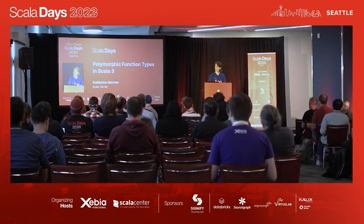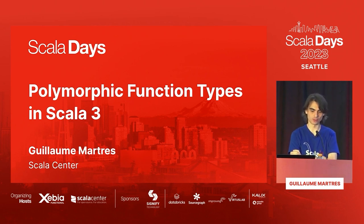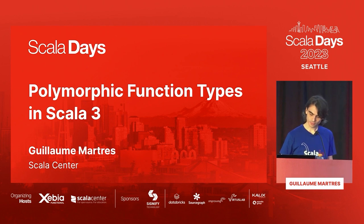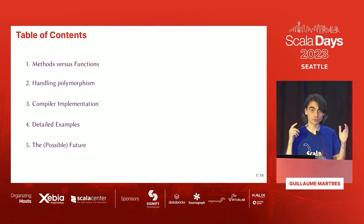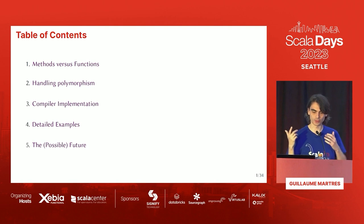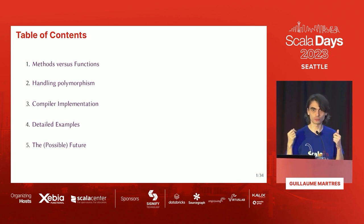Hello everyone, my name is Guillaume and I'm going to talk to you today about polymorphic function types, a feature introduced in Scala 3 which I contributed with the help of others. I'm going to first explain the difference between methods and functions, then talk about what polymorphism is and how we want to handle it, then how we implemented this feature in the compiler, then give examples of what this feature might be useful for, and end by talking about possible improvements we want to do in the future.